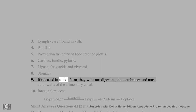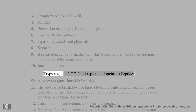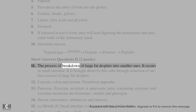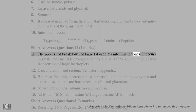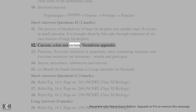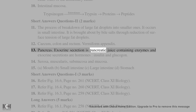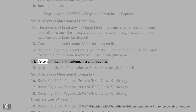9. If released in active form, they will start digesting the membranes and muscular walls of the alimentary canal. 10. Secreted by intestinal mucosa; enterokinase activates trypsinogen into trypsin, which then acts on proteins to produce peptides. Short answers (2 marks): 11. Emulsification is the process of breakdown of large fat droplets into smaller ones. It occurs in the small intestine, brought about by bile salts through reduction of surface tension of large fat droplets. 12. Caecum, colon, and rectum; vermiform appendix. 13. Pancreas — exocrine secretion is pancreatic juice containing enzymes; endocrine secretions are hormones insulin and glucagon. 14. Serosa, muscularis, submucosa, and mucosa.